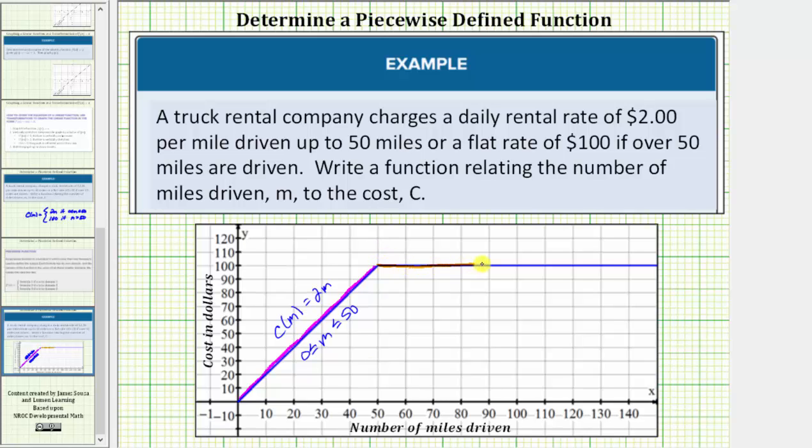And then this part of the graph is given by the function c of m equals one hundred if m is greater than fifty. I hope you found this helpful.